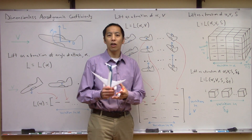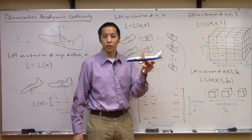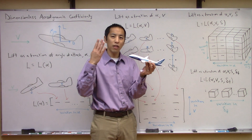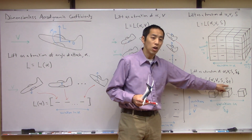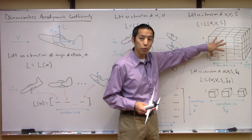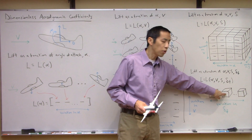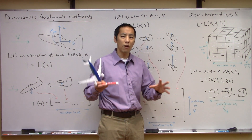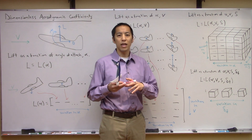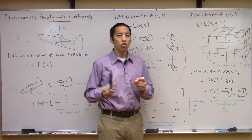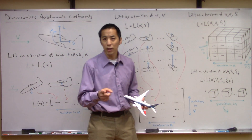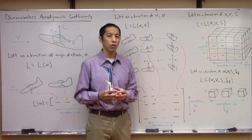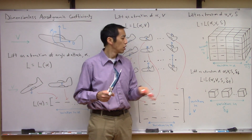We're not even done — this is not all the things that lift depends on. This aircraft has things like control surface deflections — it has flaps. If I deploy the flaps at different angles, I bet the lift changes again. So that's a fourth independent parameter. Now I need a 3D array for zero-degree flaps, another completely different 3D array for ten-degree flaps, and so on. Every time you add an independent variable, the dimensionality of this problem goes up. That sets the stage for this idea of dimensionless aerodynamic coefficients, because what we want to ask is: can I squash down some of these dimensions, or are some of these not truly independent?